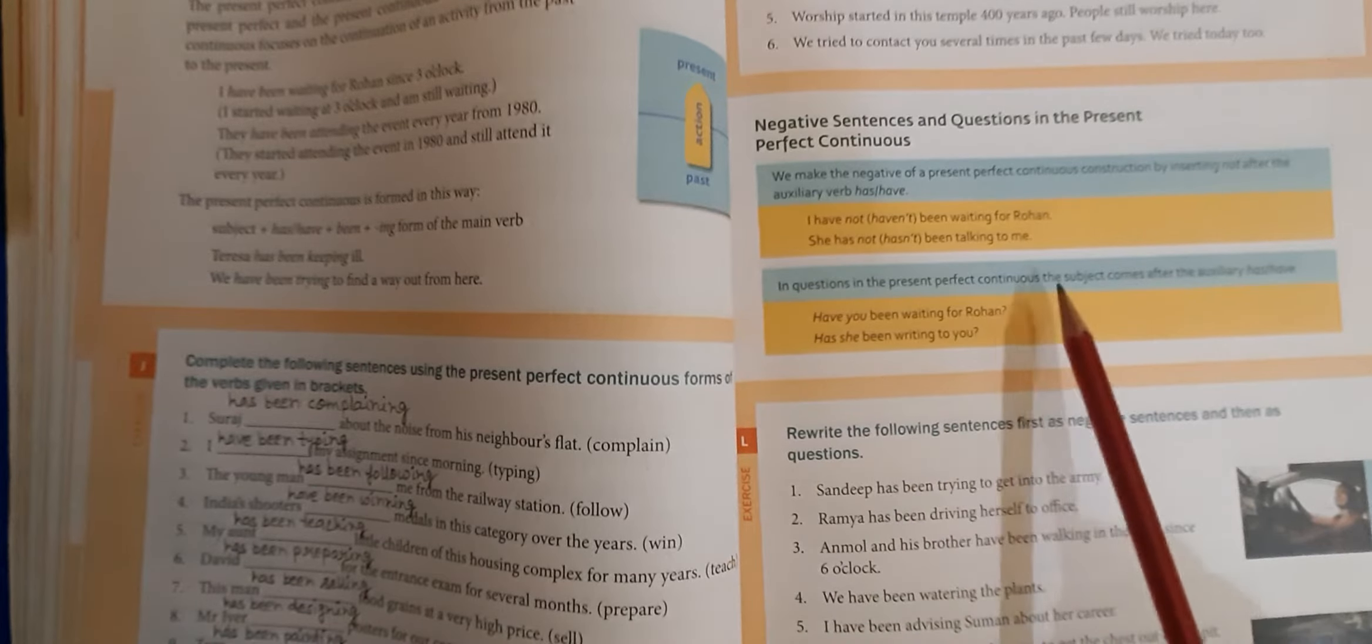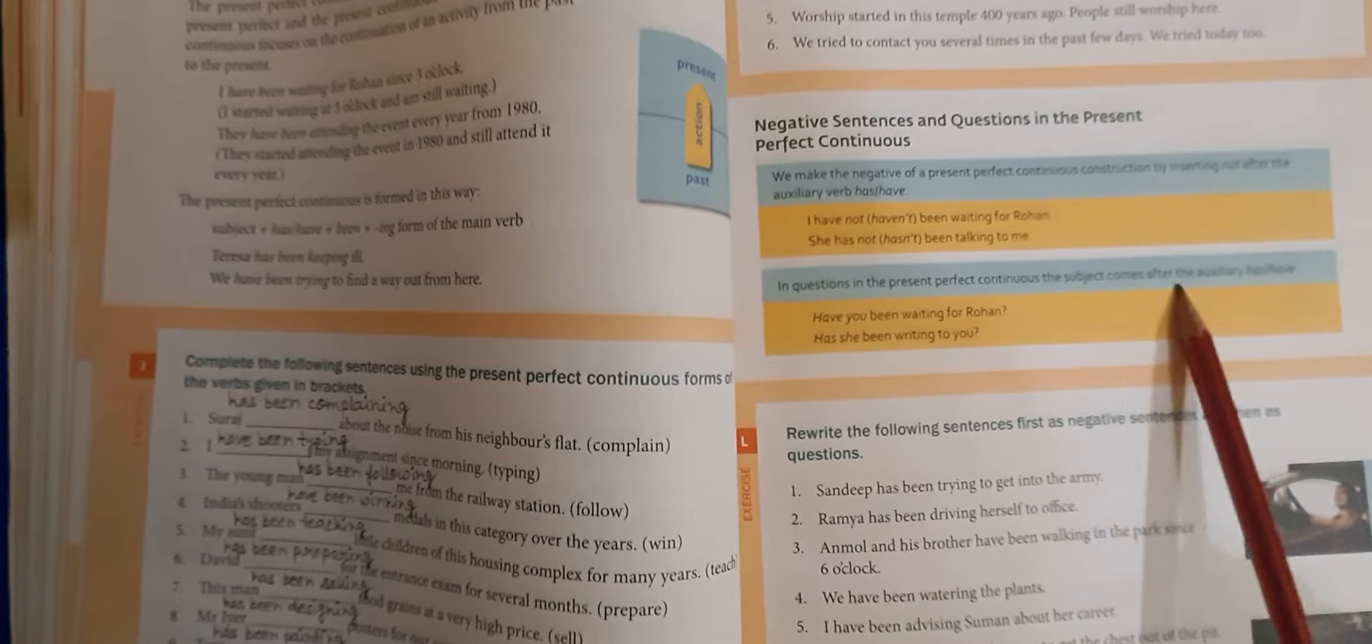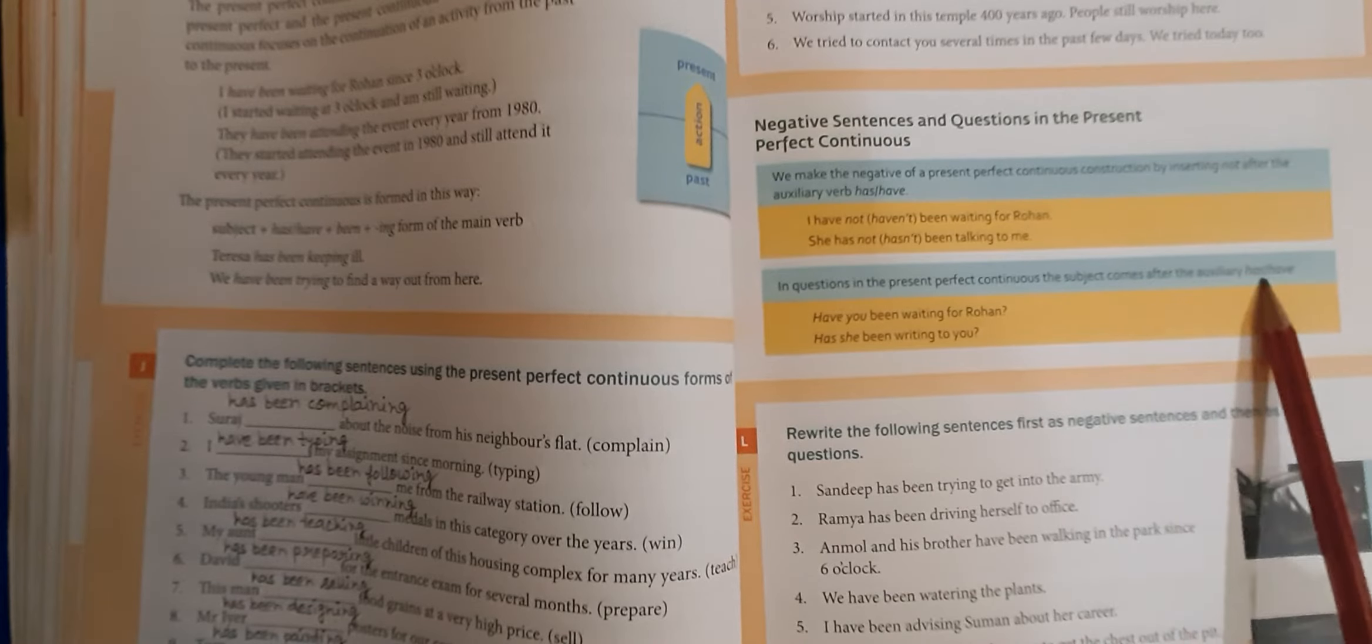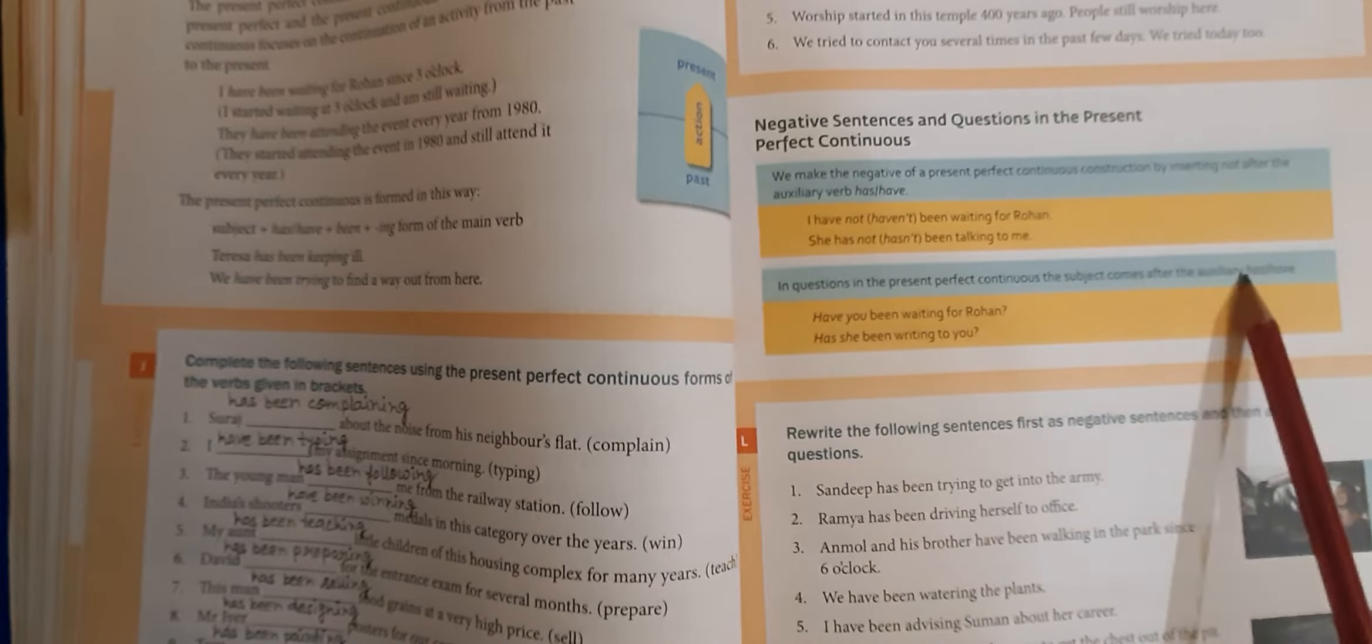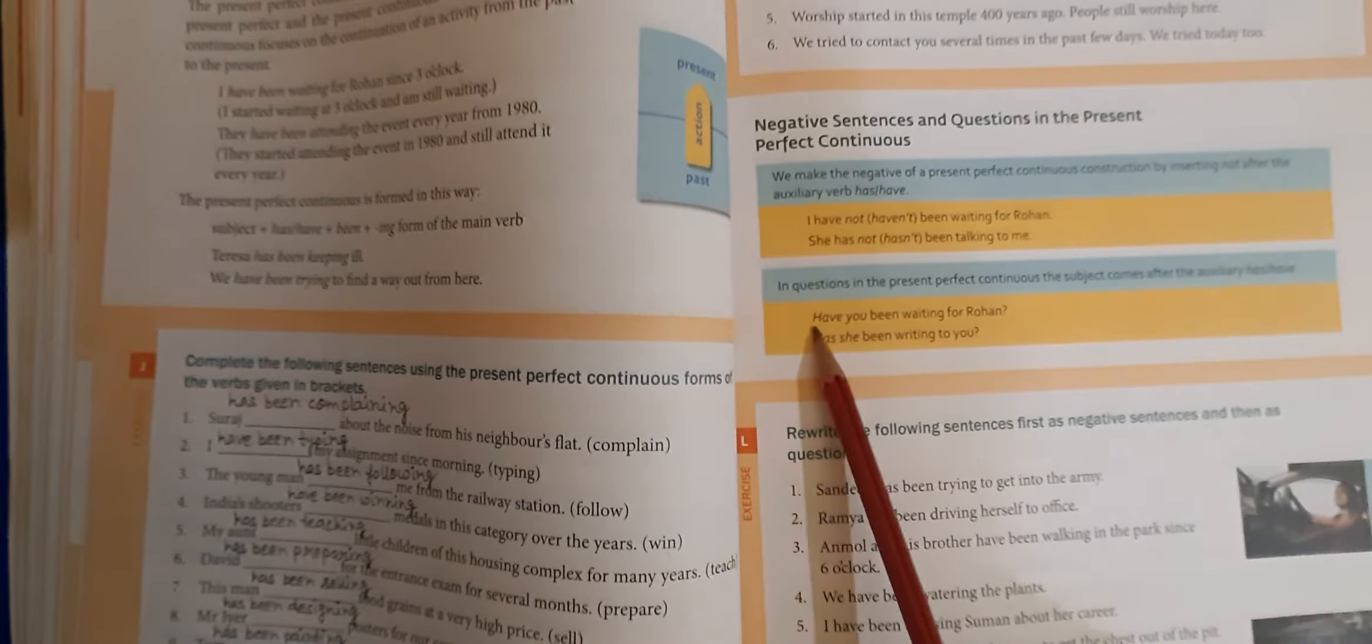In questions in the present perfect continuous, the subject comes after the auxiliary has or have. In questions mein, interrogative sentence mein, has have subject se pehle aega.